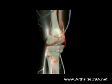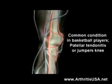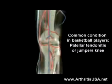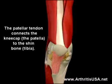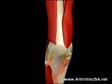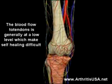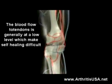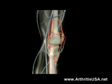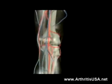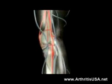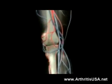A very common condition seen in basketball players is patellar tendonitis, also known as jumper's knee. The patellar tendon connects the kneecap, also known as the patella, to the shin bone. The blood flow to the tendon is generally at a low level, which makes self-healing difficult. Patellar tendonitis is a condition that arises when the tendon and the tissue that surrounds it become inflamed and irritated.